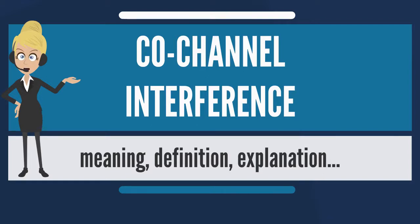Co-channel interference arises in cellular mobile networks owing to this phenomenon of frequency reuse. Thus, besides the intended signal from within the cell, signals at the same frequencies — co-channel signals — arrive at the receiver from undesired transmitters located far away in other cells, leading to deterioration in receiver performance.